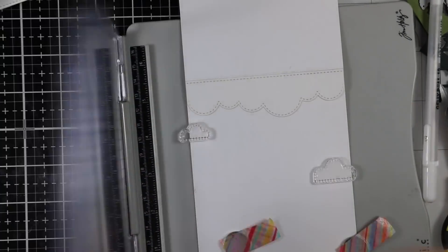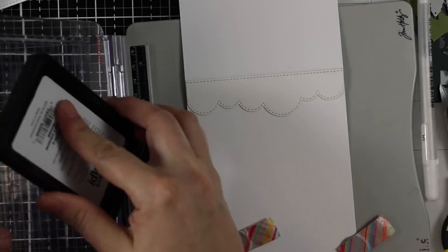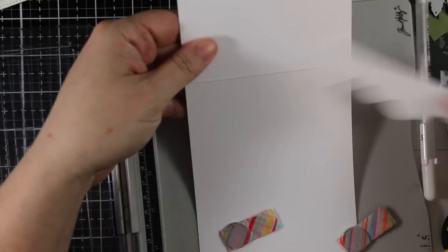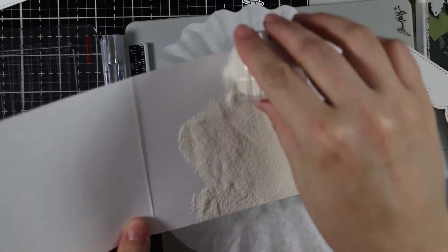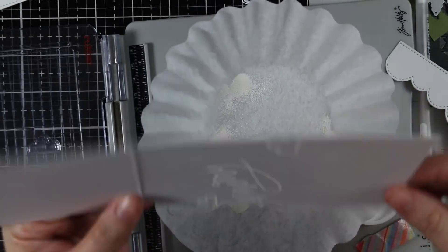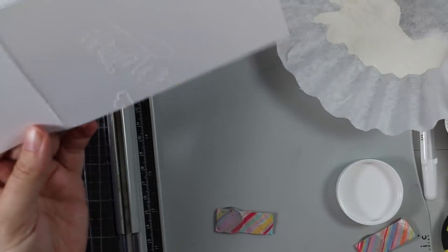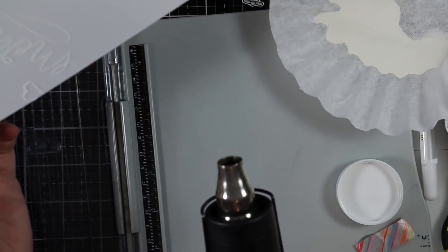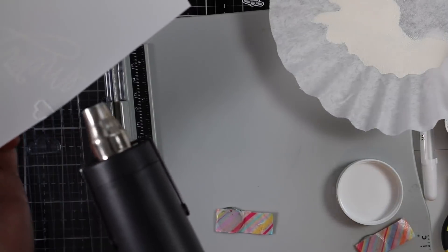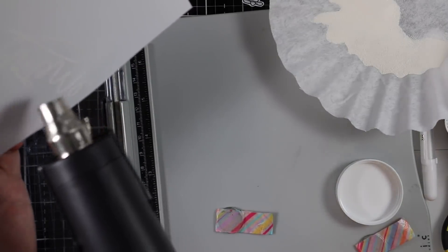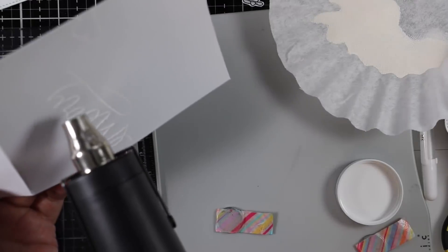I was going to white heat emboss it for emboss resist, and then I remembered I had Hero Arts white puff embossing powder. I've never used this before. I tested it out right before filming. The easiest way to explain this is it's kind of like liquid applique in a powder form. You sprinkle it on just like regular embossing powder, and when you heat it, it literally puffs up.